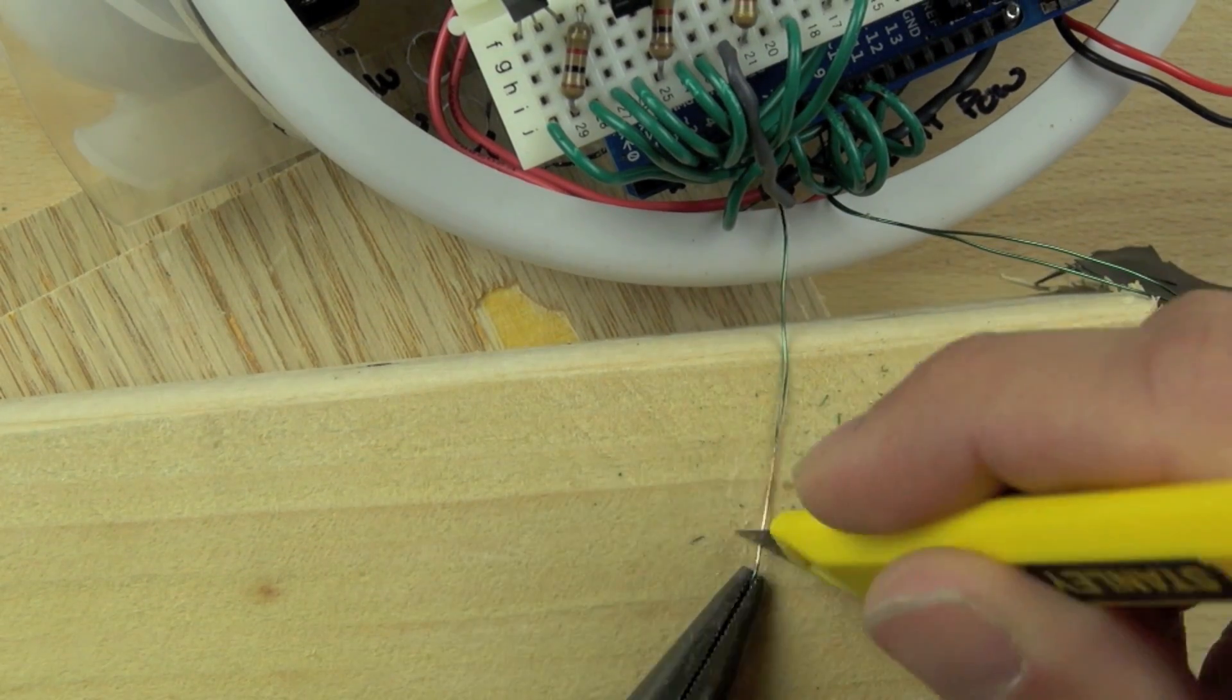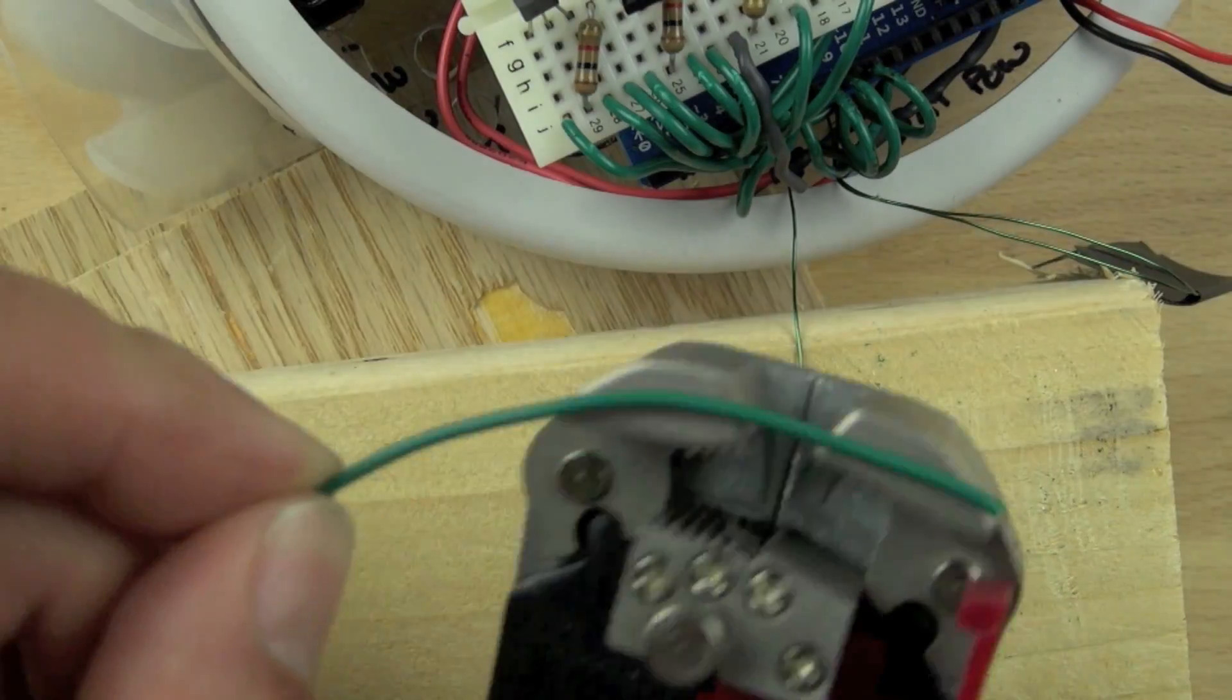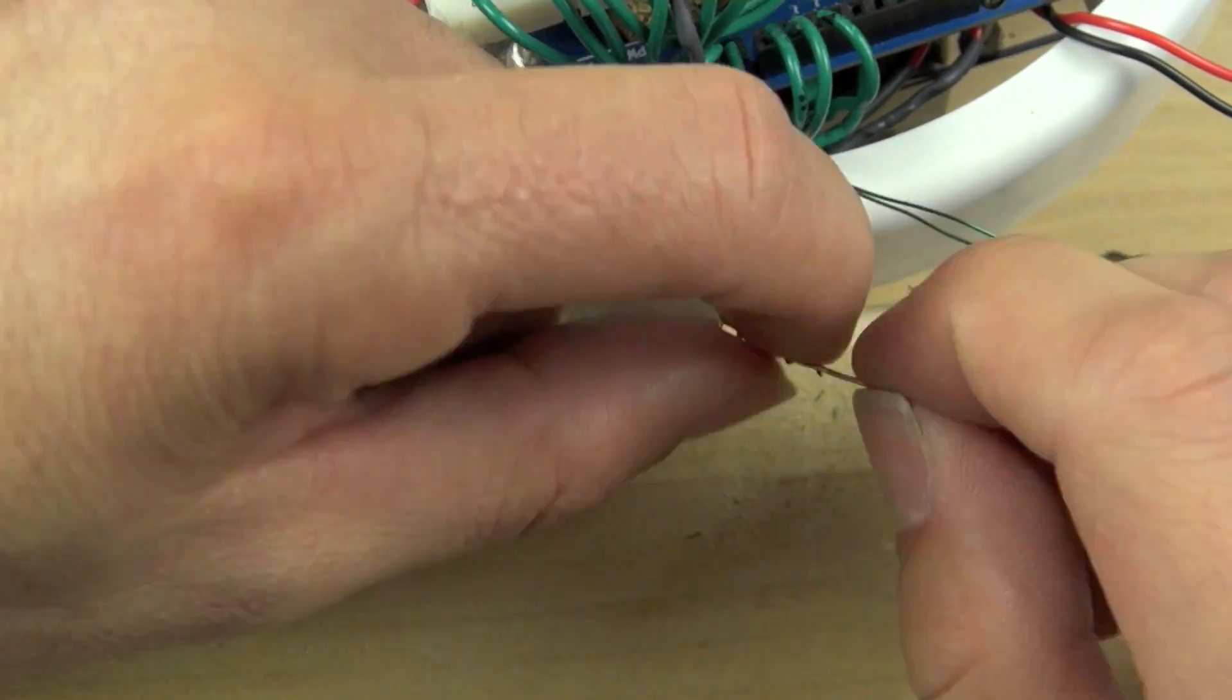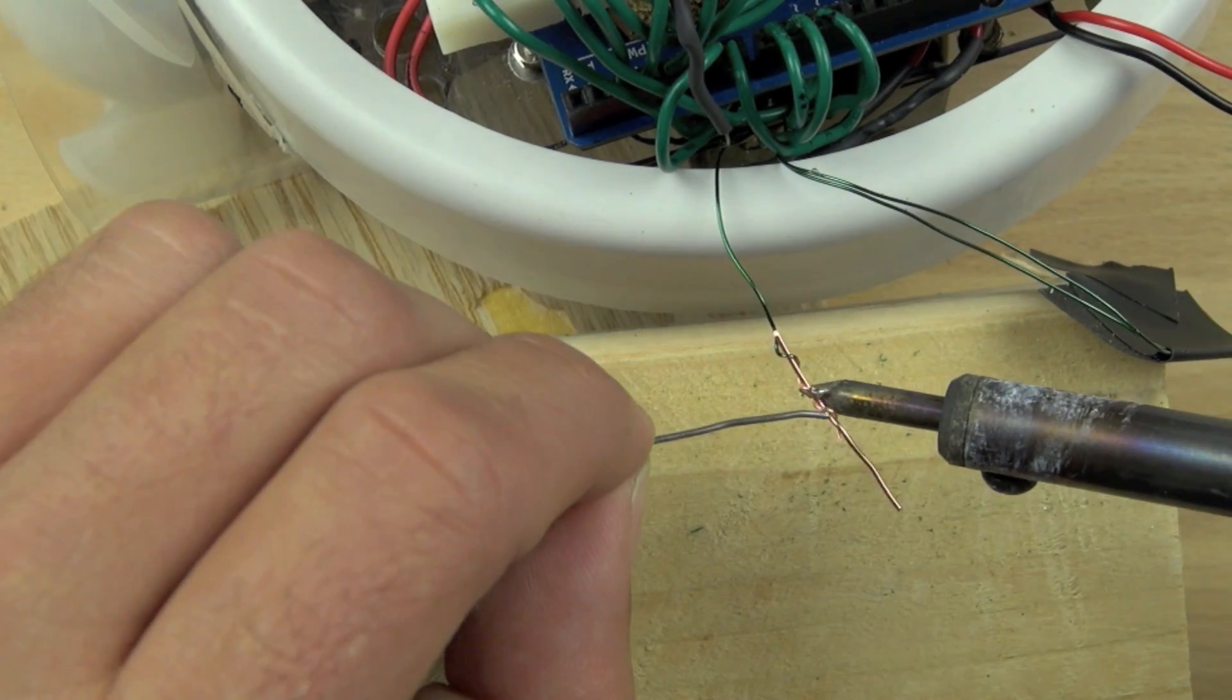We're just stripping off the lacquer coating. We'll wrap it around that 22 gauge wire and then we'll solder it in place and we'll heat shrink tubing that wire as well.